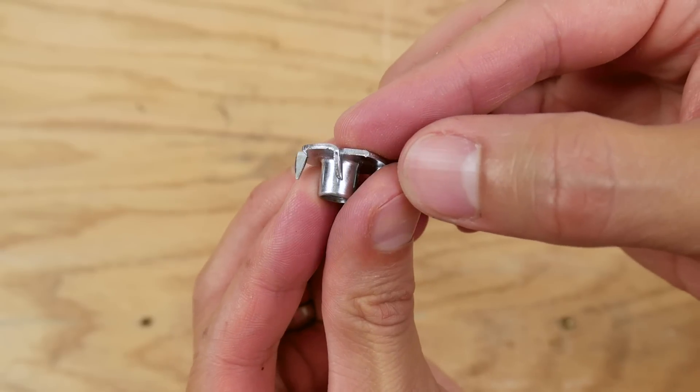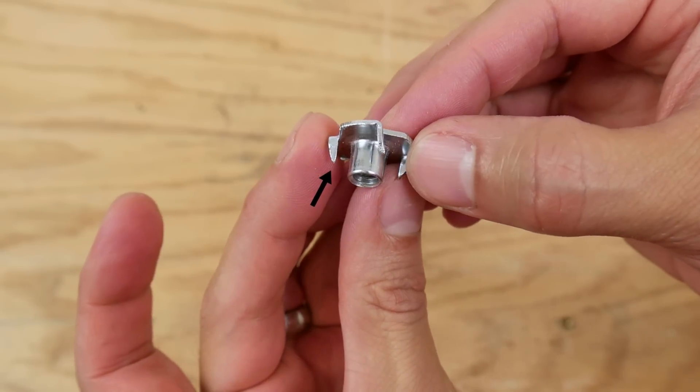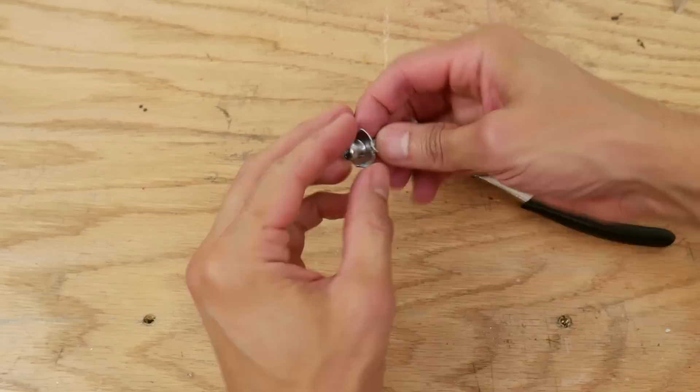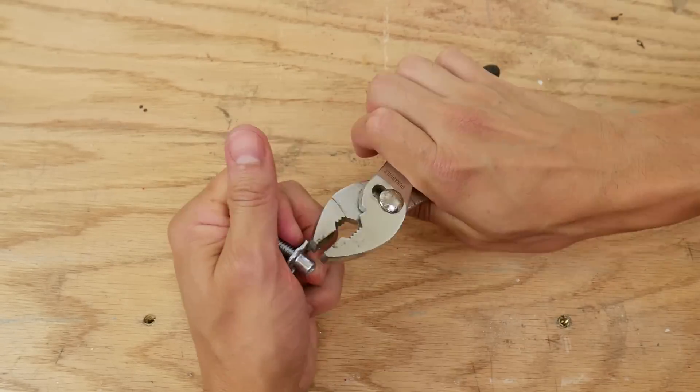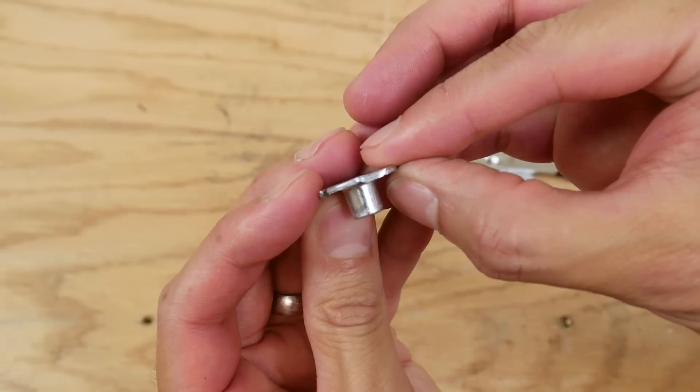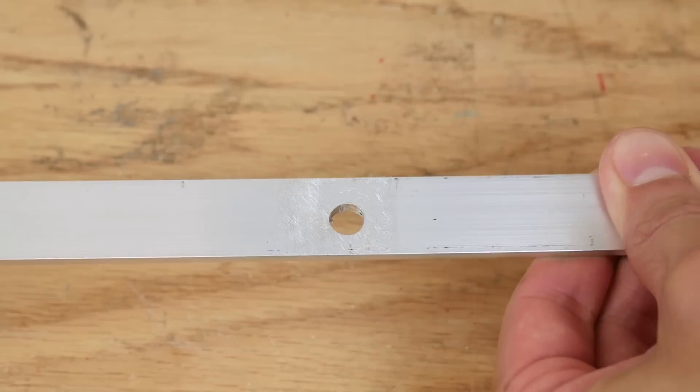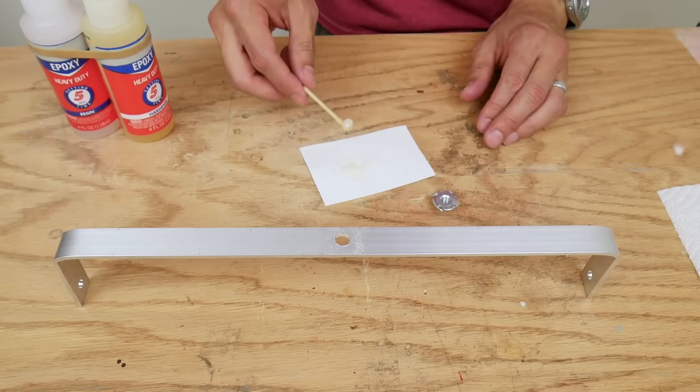The T-nuts I got have four teeth that bite into wood. I bent those back on one nut with pliers. Then I epoxied it into the hole in the center of the bracket.